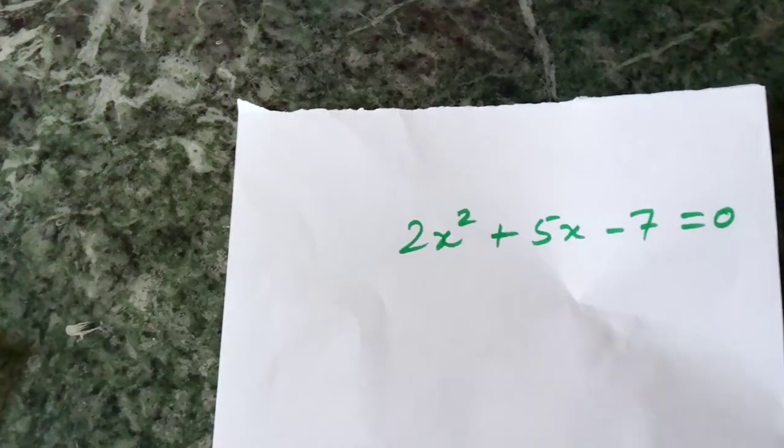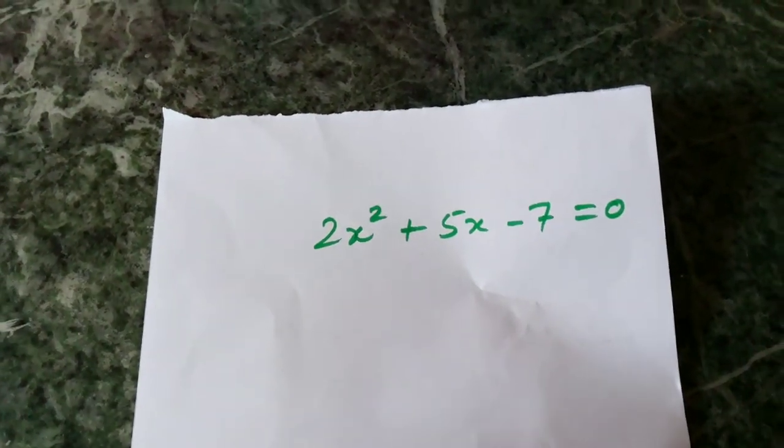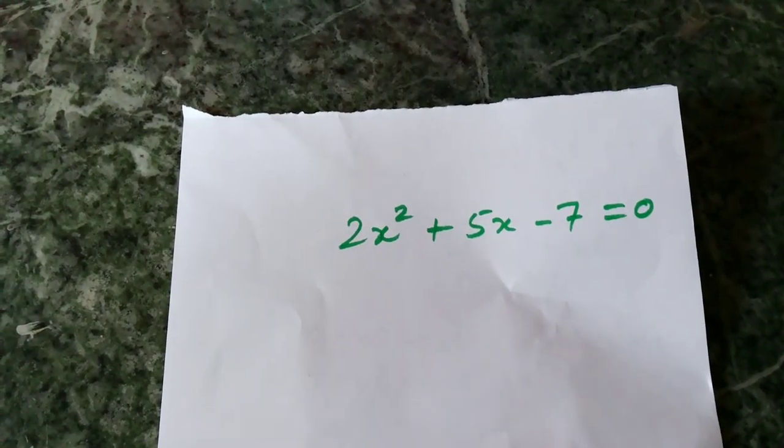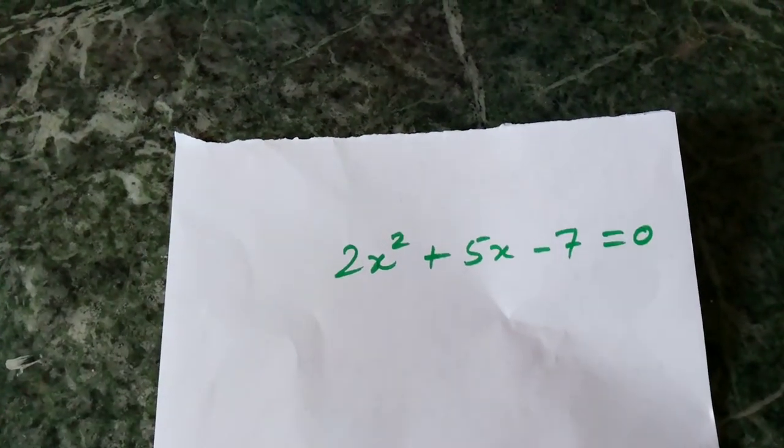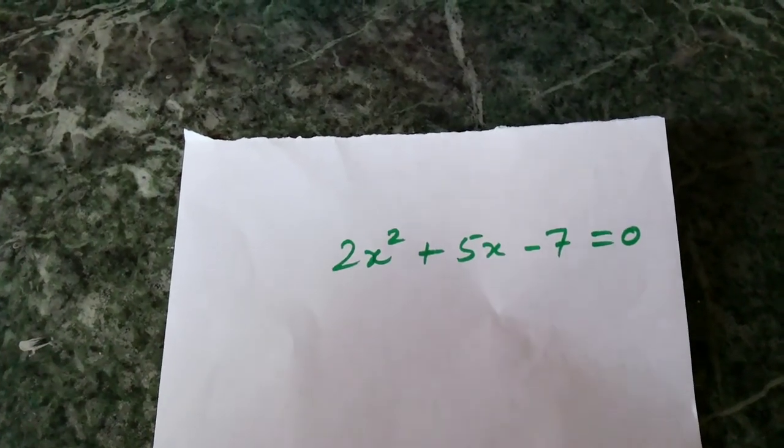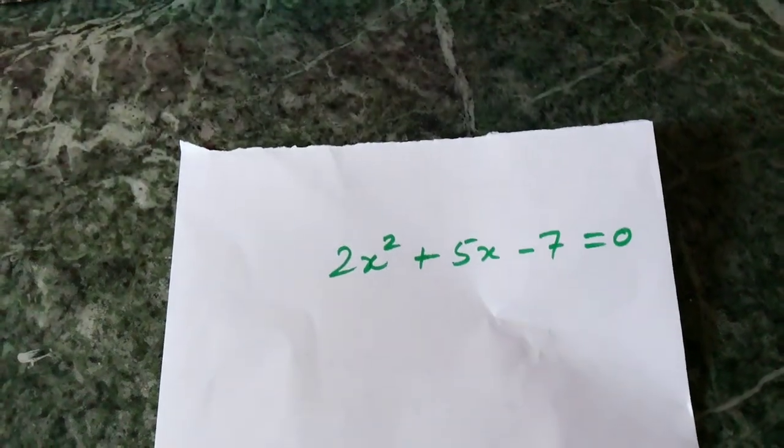Example 4: 2x squared plus 5x minus 7 equals zero. It is not a linear equation in two variables. Why? Because there is only one variable, x. And what is the degree of this equation? The degree of this equation is 2, hence it is not a linear equation in two variables.